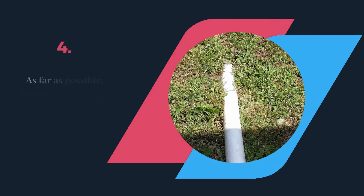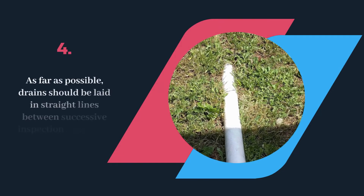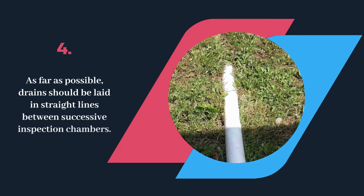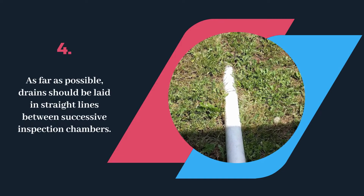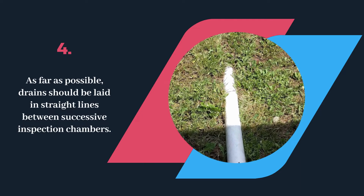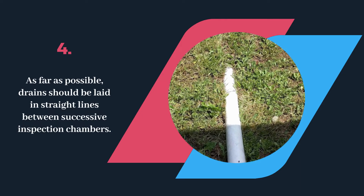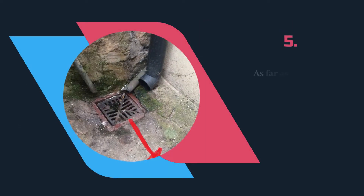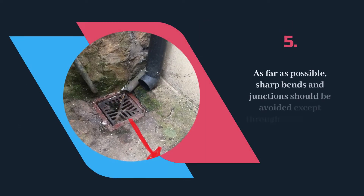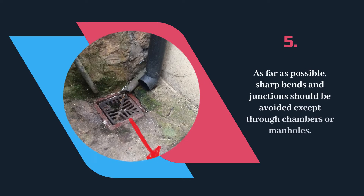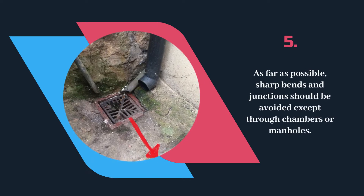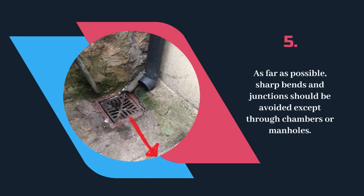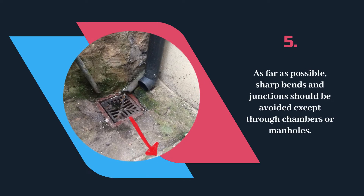As far as possible, drains should be laid in straight lines between successive inspection chambers. As far as possible, sharp bends and junctions should be avoided except through chambers or manholes.